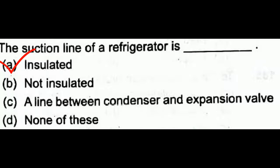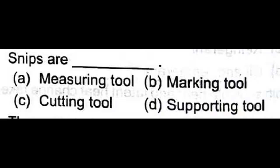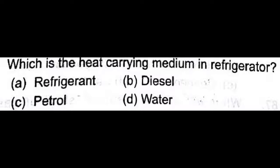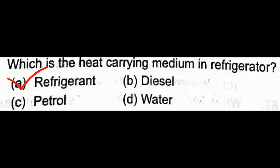The suction line of a refrigerator is always insulated to prevent heat loss. Snips are a cutting tool — there are two types: bent and straight cutting snips. The heat carrying medium in a refrigerator is the refrigerant, which absorbs heat in the evaporator and releases it in the condenser.